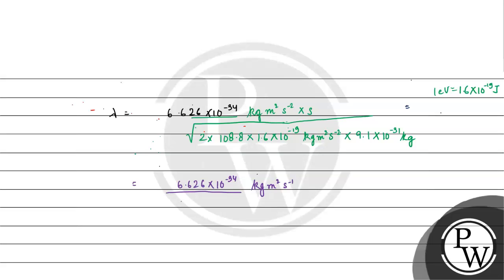The numerator is h = 6.626 × 10⁻³⁴ kg·m²/s. For the denominator, we have under root of 2 × 108.8 × 1.6 × 9.1. The powers of 10 give 10⁻³¹ × 10⁻¹⁹ = 10⁻⁵⁰, so the square root gives 10⁻²⁵.